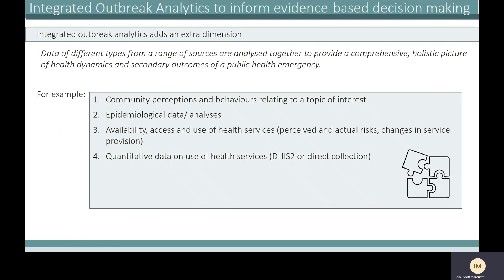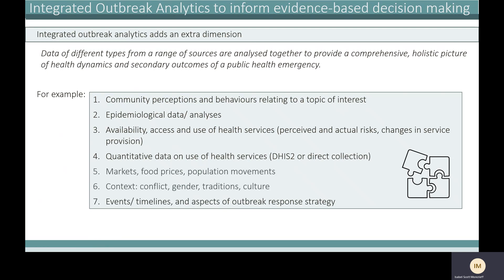This could be qualitative or quantitative — for example, DHS data or direct collection by our teams in the field. Data looking at things like exchange rates, food prices, population movements, and contextual information such as conflict in an area, gender dynamics, traditions, and cultures. This also takes into account different events occurring during an outbreak response — for example with COVID: closure of borders, closure of schools, reopening of schools — and how these events might impact community behaviors and perceptions.